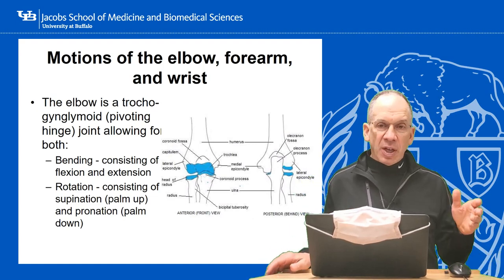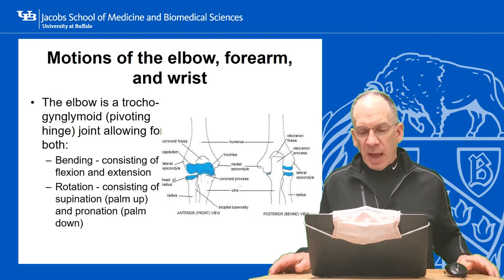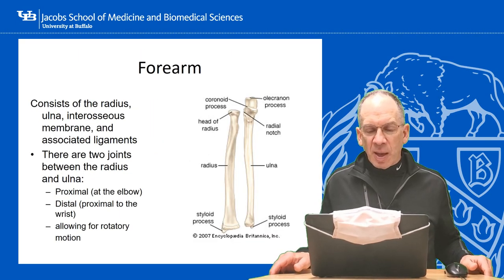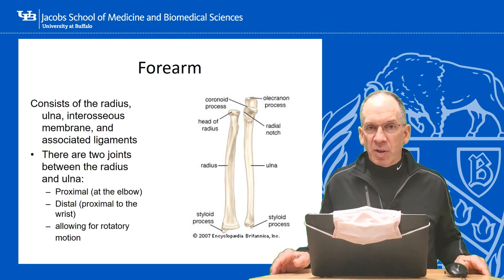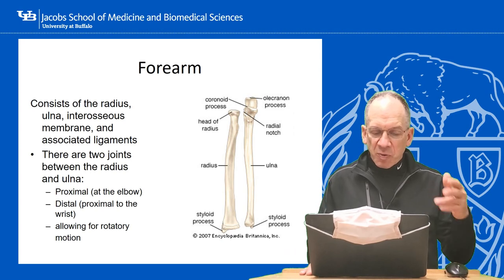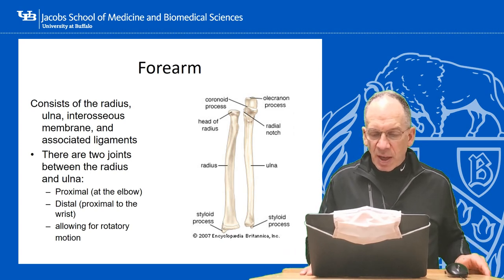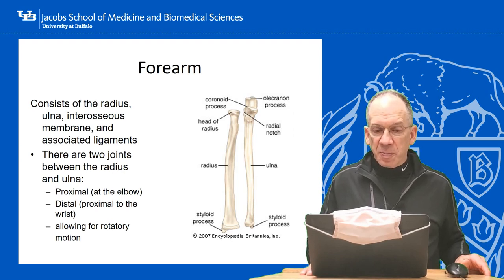I also have another lecture on the ECMC and Channel 2 website on elbow pain, which covers the same topic in about 53 seconds without commercials. This slide shows forearm anatomy — the two joints between the radius and the ulna, the proximal and distal articulations.